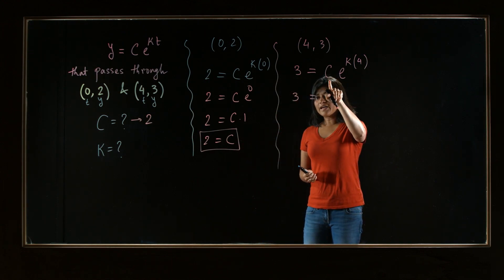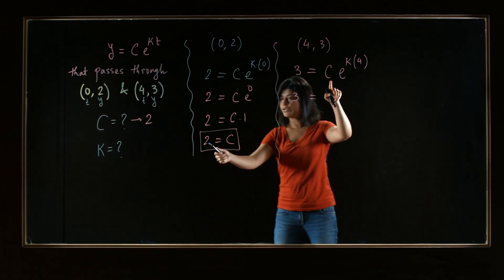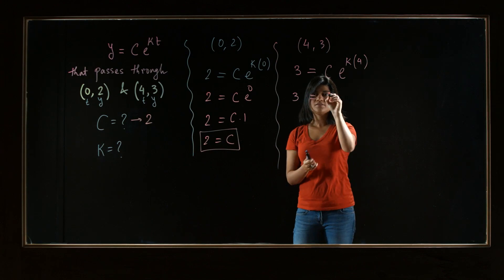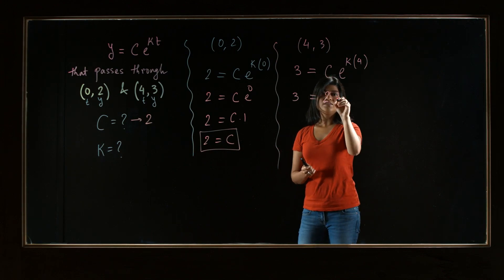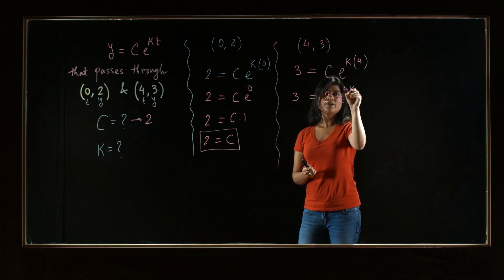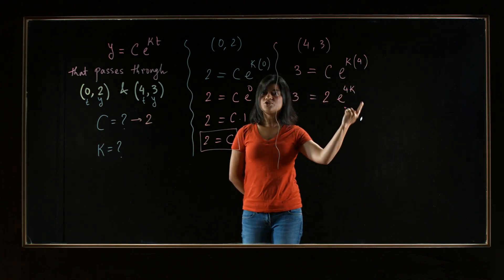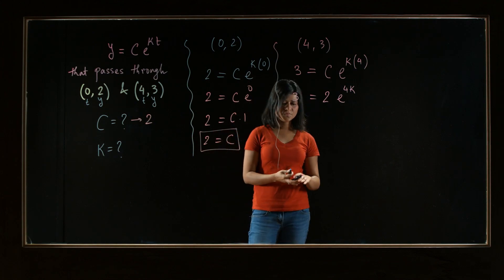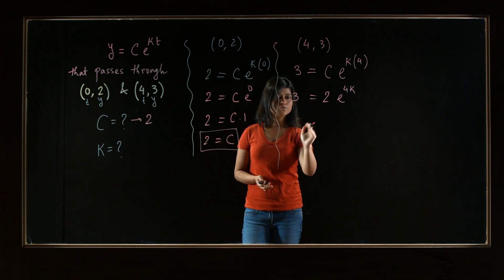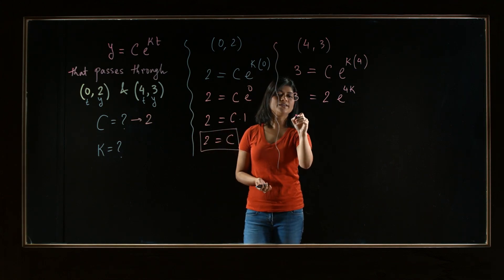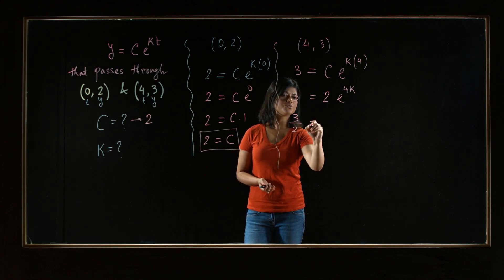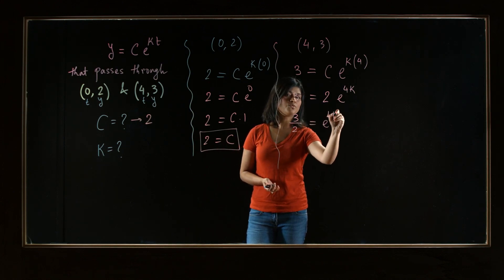Now note, we know the value for c already. So if you want, you can plug that in as well. c is 2. And this is e to the power 4k. Now we have to solve for k because this is an equation with just one variable k. So let's divide by 2 both sides. And then we get 3 over 2 is equal to e to the power 4k.